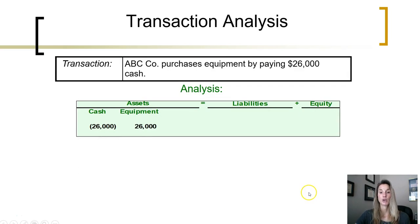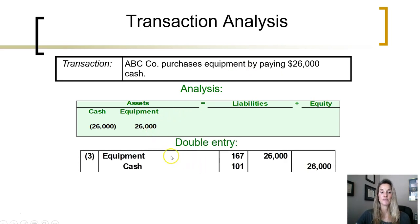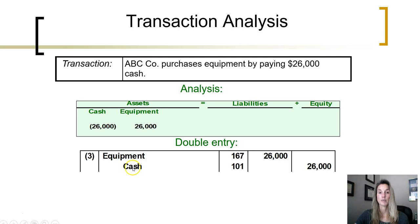Next, the company purchases equipment paying $26,000 in cash. The two accounts affected are a decrease to cash and an increase to equipment. Preparing the journal entry: we need to increase equipment — it is an asset, so to increase an asset account we debit it. Our journal entry lists the account being debited first — equipment debited $26,000. Then we need to decrease cash. Cash is an asset, so to decrease cash we credit it, indenting the account being credited after the debit for $26,000. Journal entry is complete.